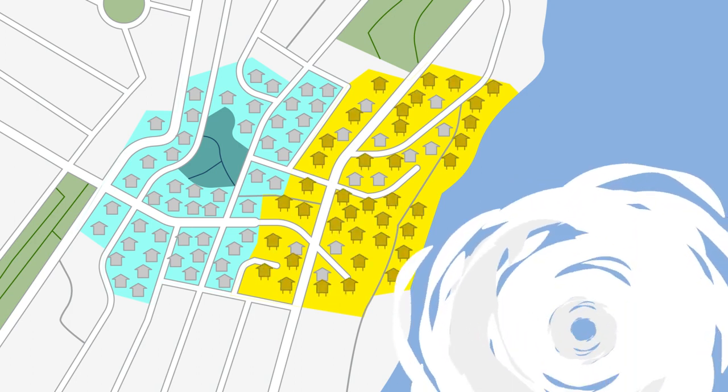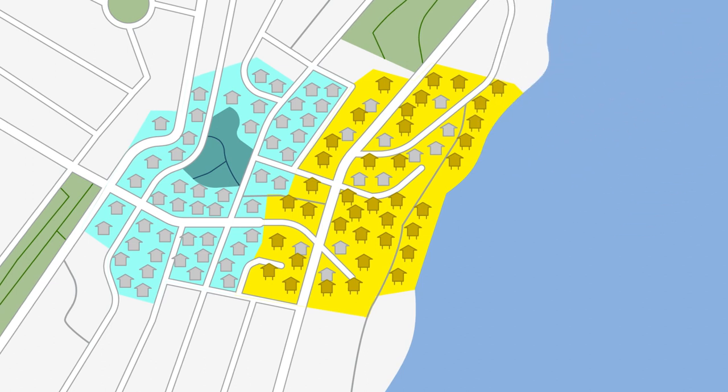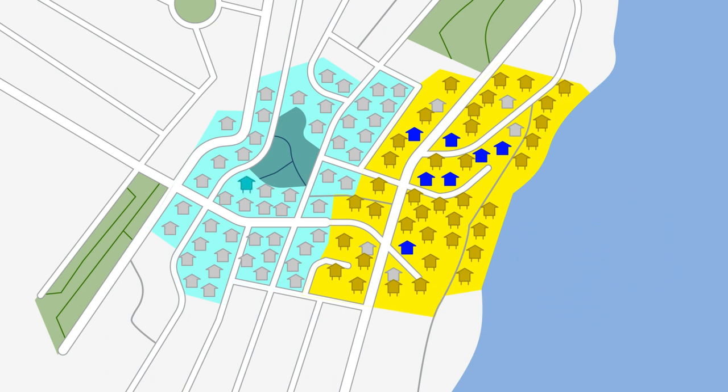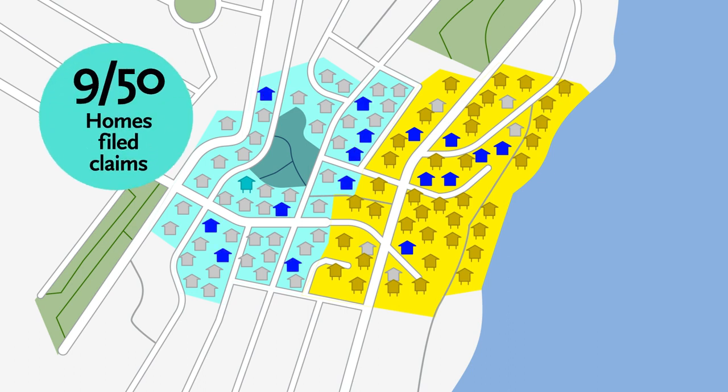When a big storm came, this made all the difference, and just 7 of 50 by-the-sea households had flood damage and filed a claim. By comparison, of the 50 households in the away-from-the-sea group, just one erected stilts. And after the big storm, nine homeowners filed claims for flood damage.